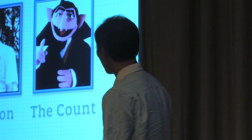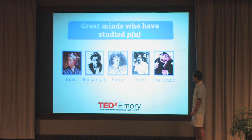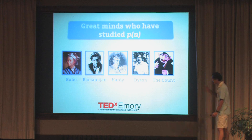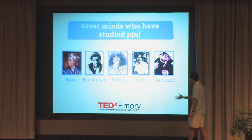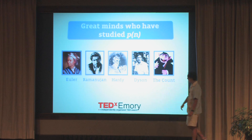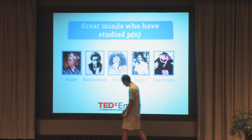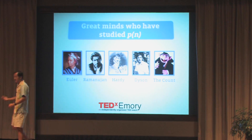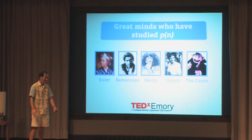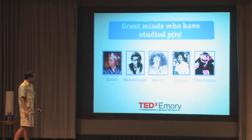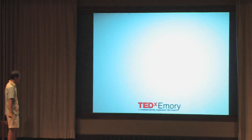This task of adding and counting — this function that I've called P — has been studied by many great mathematical minds, dating to Euler, the legendary Indian mathematician Ramanujan, G.H. Hardy, perhaps the greatest analytic number theorist in the early 20th century, and Freeman Dyson, the famous physicist at the Institute for Advanced Study. You can find problems like this on Sesame Street, yet all these great minds studied that simple function P.